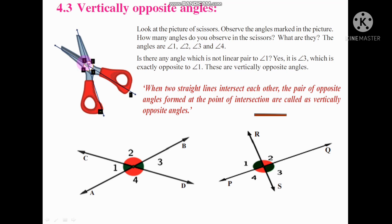How many angles do you observe in the scissors? We are observing four angles: angle 1, angle 2, angle 3, and angle 4. Is there any angle which is not a linear pair to angle 1? In a straight line, angle 1 is a linear pair of angle 2, and angle 1 is a linear pair of angle 4. Also, angle 1 is a linear pair of angle 3.